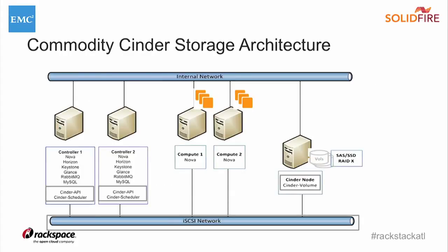Here is a high-level diagram of a typical OpenStack deployment using Rackspace Private Cloud. We have two controller nodes for redundancy — that's where we have the API service and the scheduler service across both controller nodes for failover purposes. The compute nodes talk to the Cinder volume node using the iSCSI network, and we want redundant network switches if at all possible. The Cinder node in a typical Rackspace deployment is a Dell server with anywhere from six to eight drives — SSDs, near-line SAS, or 15K/10K SAS, depending on customer requirements.